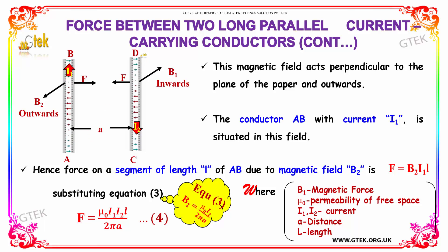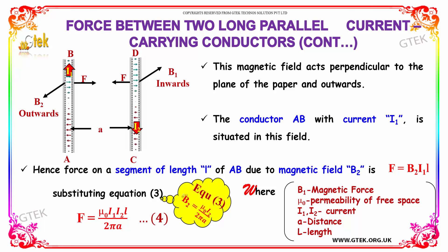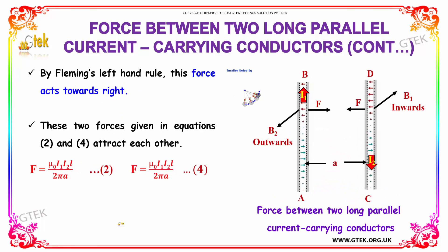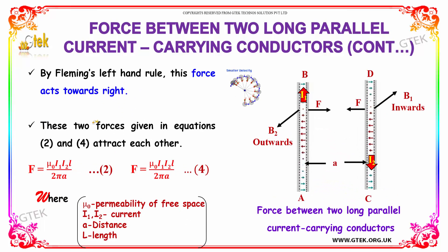The conductor AB with the current I1, situated in the field of CD, experiences a force F equal to B2 into I1 into L. Substituting the value of B2, we get F equal to μ₀ into I1 into I2 into L divided by 2πA. As indicated by Fleming's left-hand rule, the force will act towards the right.